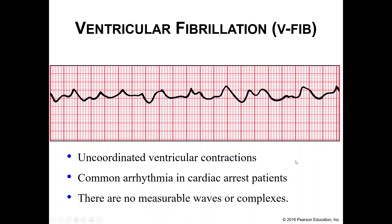Ventricular fibrillation, or V-fib — your ventricles are not contracting in a coordinated fashion. This happens commonly in cardiac arrest patients. There are no longer any measurable waves or complexes; we don't have a QRS complex anymore, and you can't tell which of the signals would pass as a P wave. This is not good either.